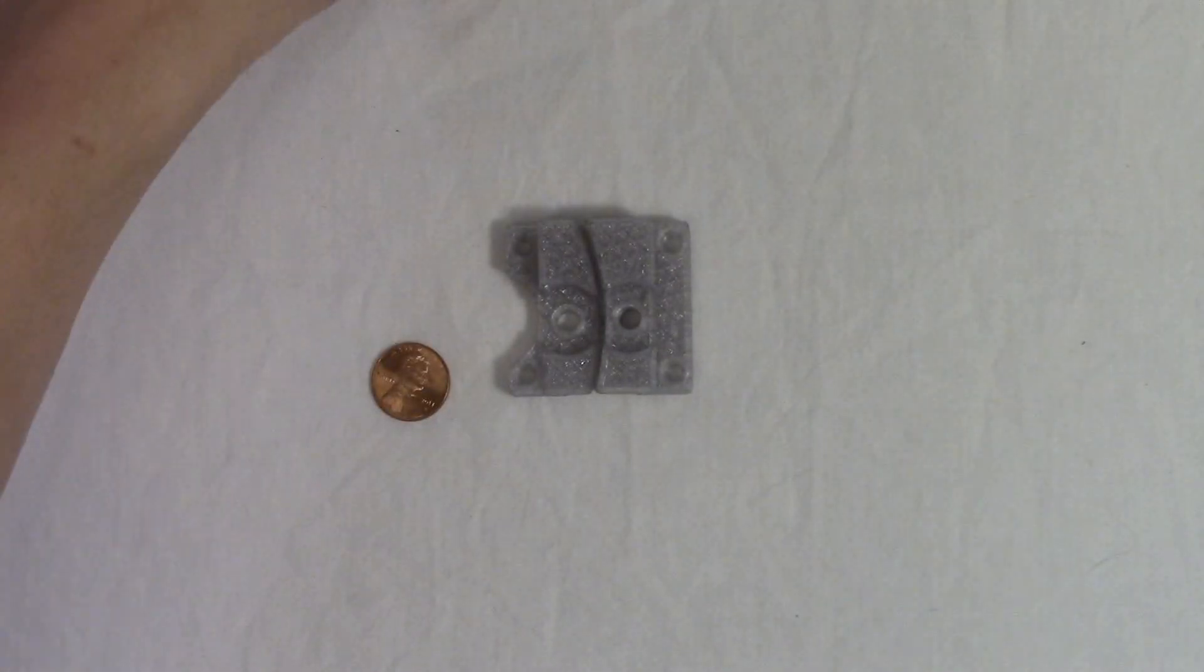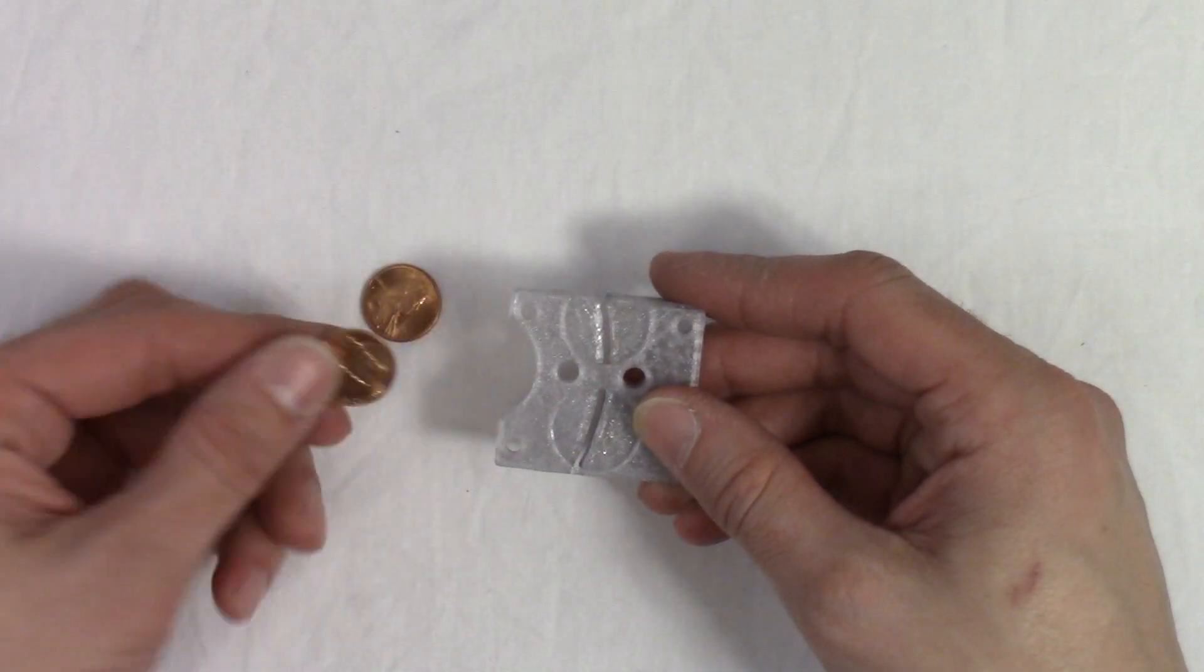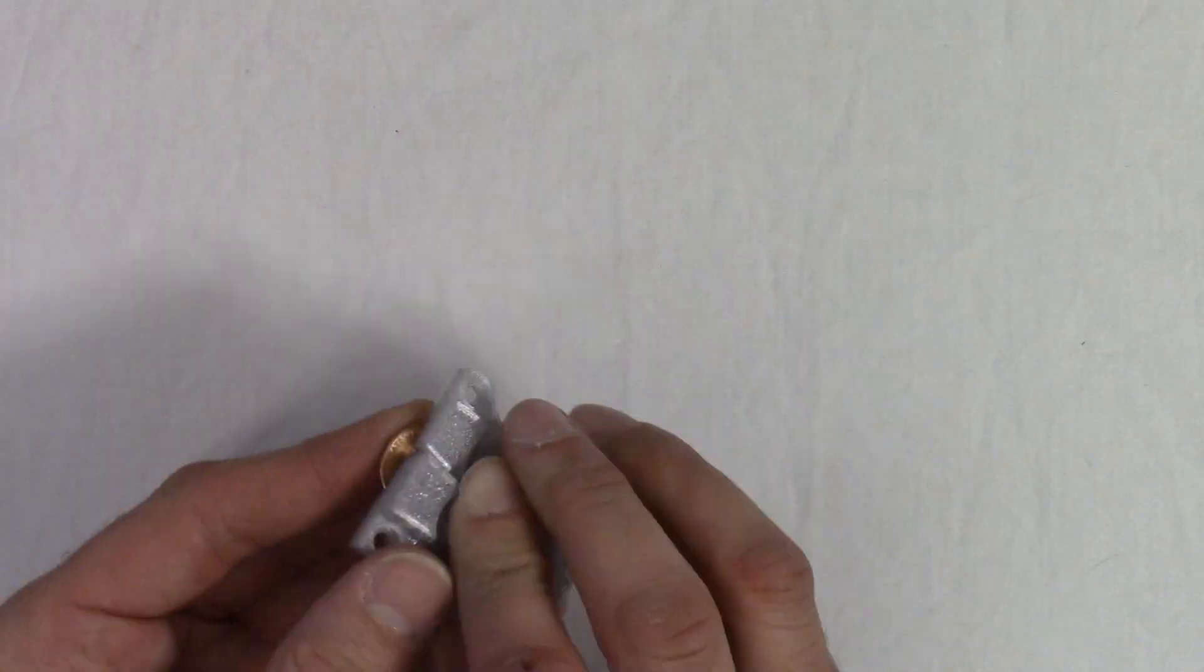Take the top printed part and two pennies or washers and snap and place the pennies to the bottom of this part.